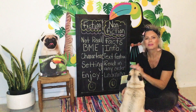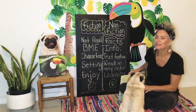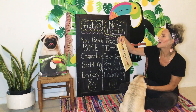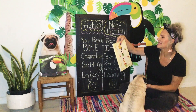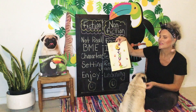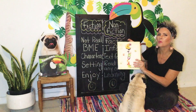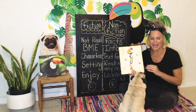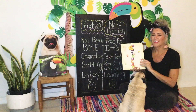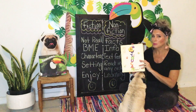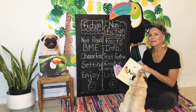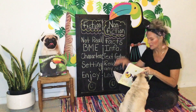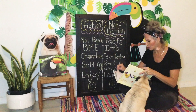Today I'm going to read you this story called Toucan Can by Juliet McIver and Sarah Davis. Now I have to warn you, this book is full of rhymes and a lot of tongue twisters. So I'm going to try my best to read this without getting my tongue all twisted up. Here we go.